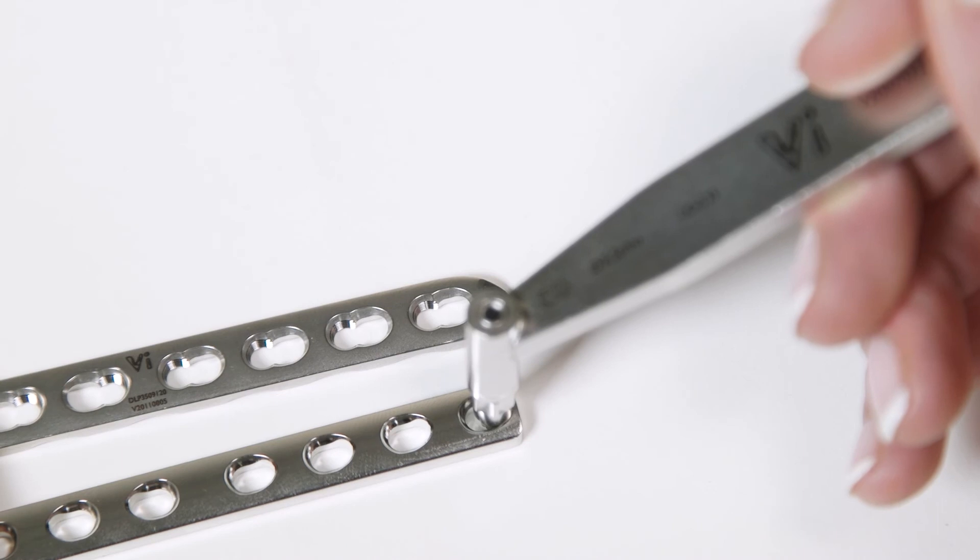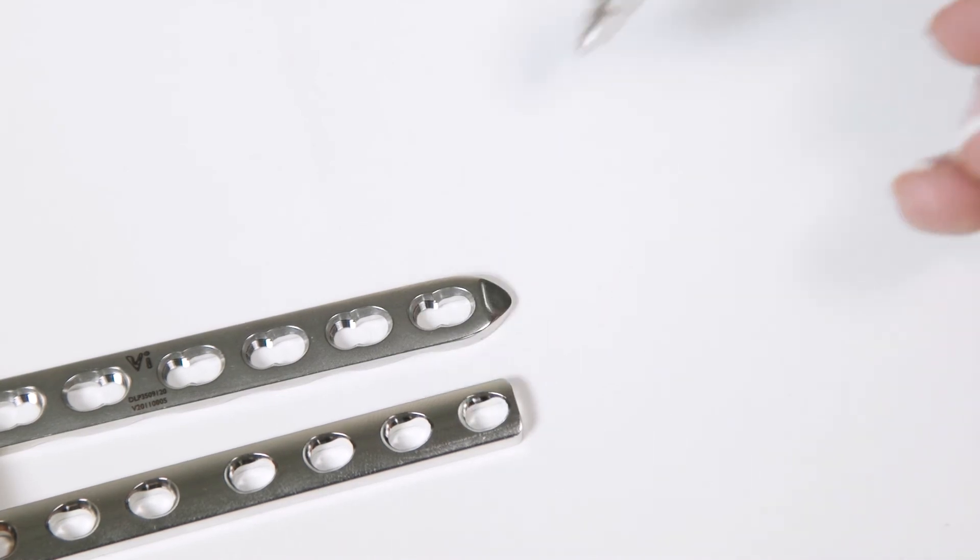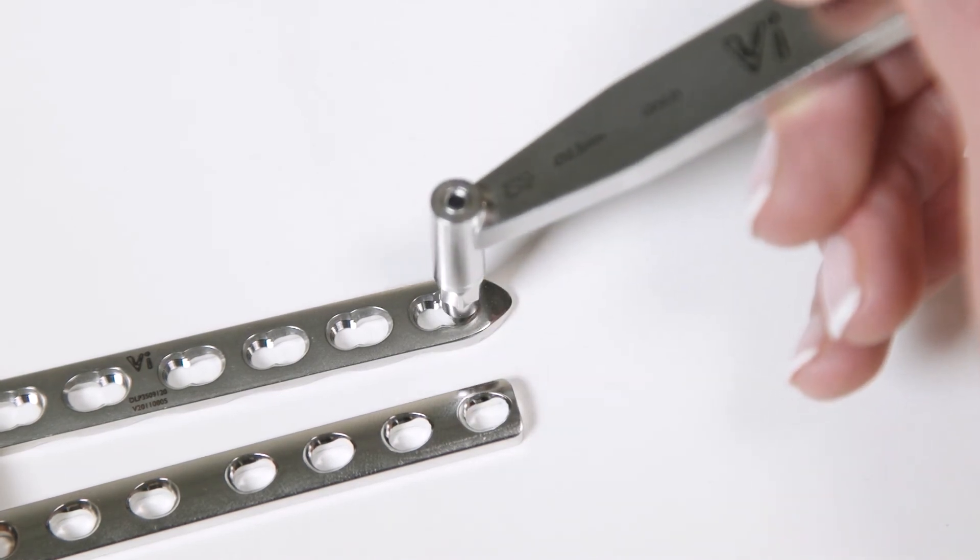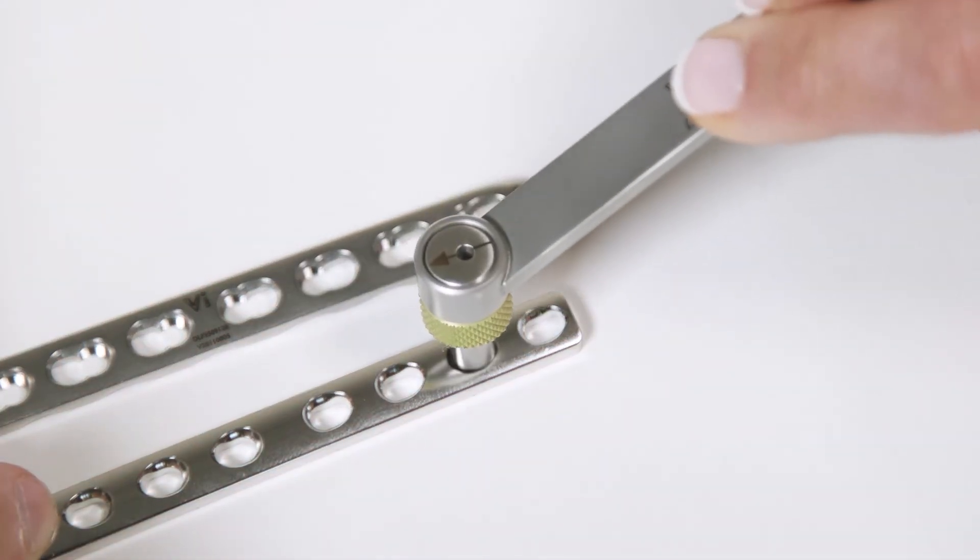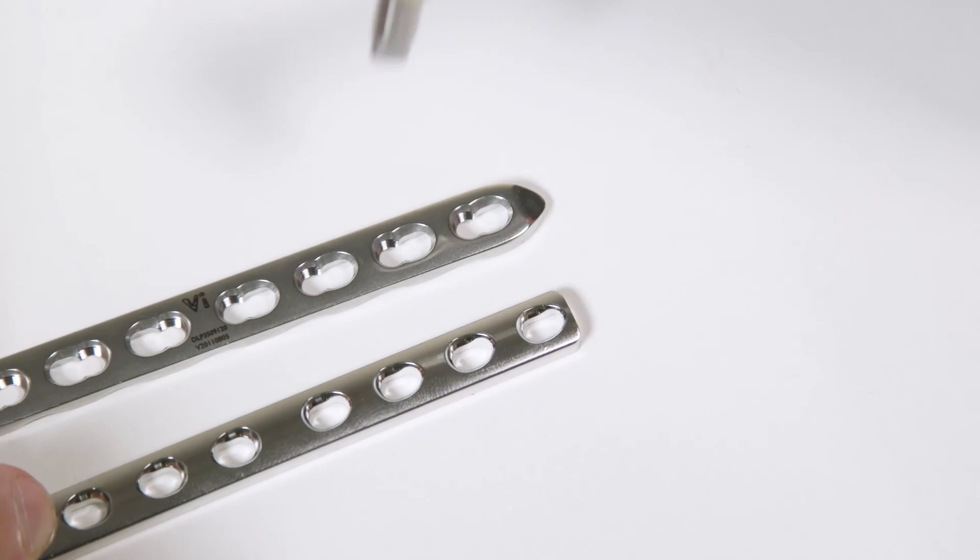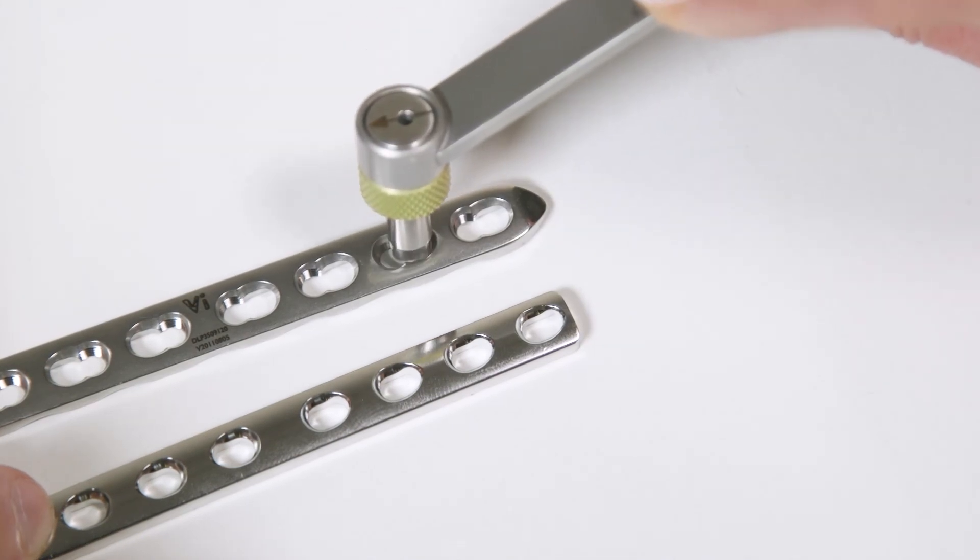Remember, a Universal Drill Guide can be used in either a DCP or a DLP. The Load Neutral Drill Guide can only be used in a DCP. The tip of the device will not fit into the combi hole of a DLP.